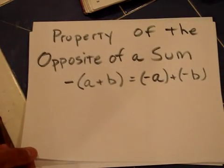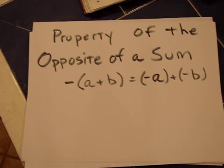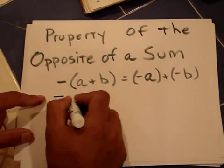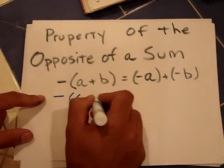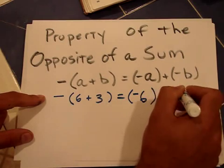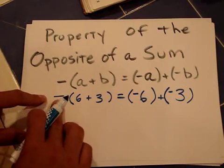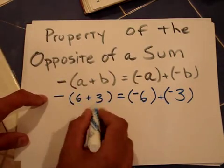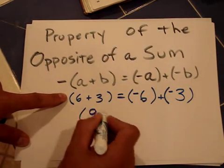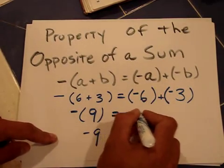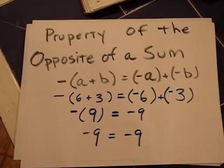There is also the property of the opposite of a sum. The opposite of two numbers added together is the same as adding the opposites of the individual numbers. For instance, the opposite of (6 + 3) is the same as adding the opposite of 6 to the opposite of 3. Since 6 + 3 = 9, the opposite of 9 is negative 9 — and likewise, negative 6 plus negative 3 also gives negative 9.